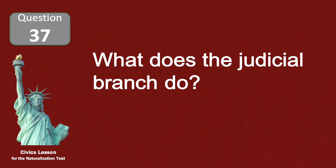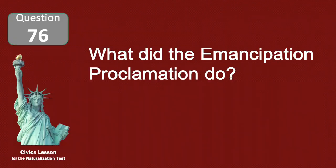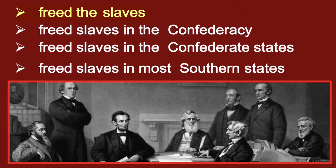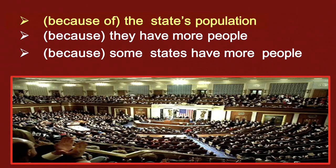What does the judicial branch do? It explains laws. What did the Emancipation Proclamation do? Free the slaves. Why do some states have more representatives than other states? Because of the state's population.